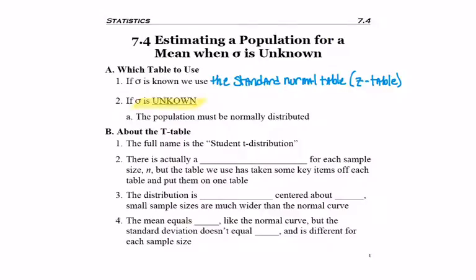But in the case where sigma is unknown, we're going to be using the student t-distribution called the t-table. Our population still needs to be normally distributed or large enough, and we'll talk more about that later. But let's learn about this new student t-distribution called the t-table.